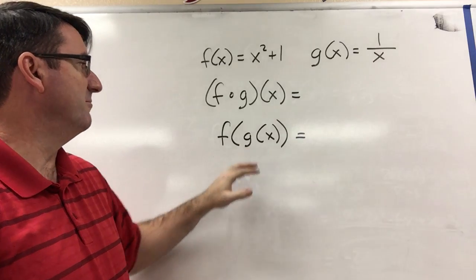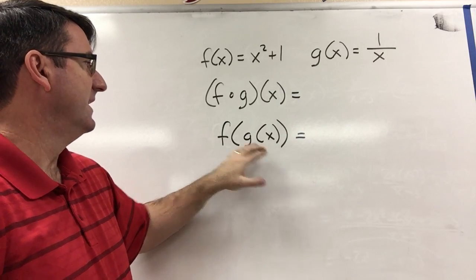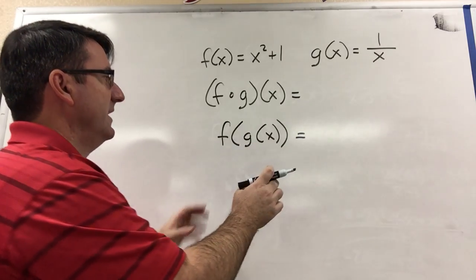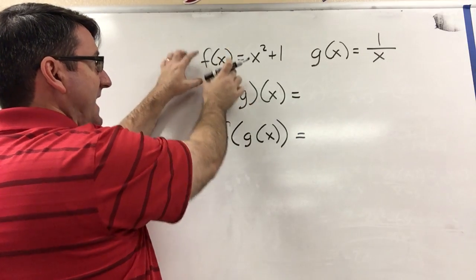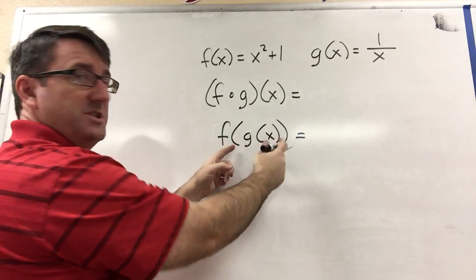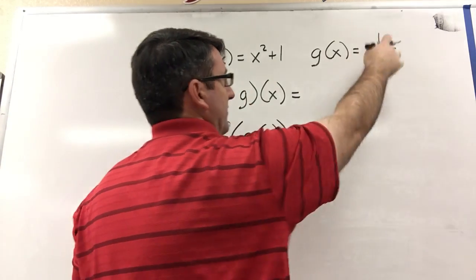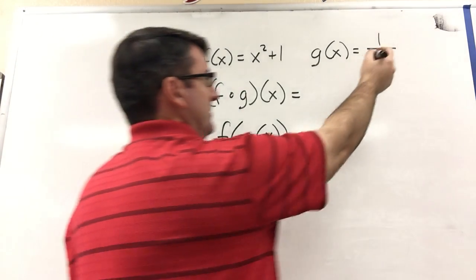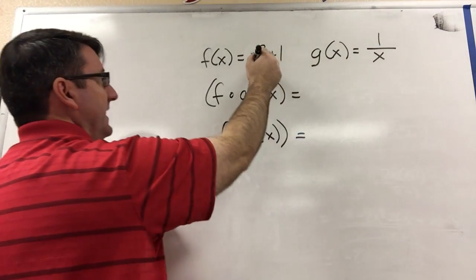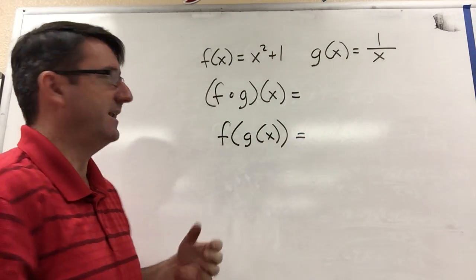But for me, it helps me to see that what we're doing here is just replacing this x in f of x with g of x, which is 1 over x. So we're just going to take this 1 over x and plug it in for the x in f of x.